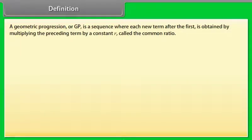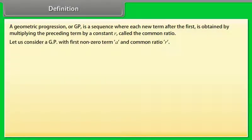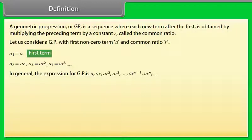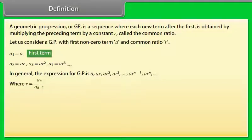A geometric progression or GP is a sequence where each new term after the first is obtained by multiplying the preceding term by a constant R, called the common ratio. Let us consider a GP with first non-zero term A and common ratio R. A1 = A, A2 = A·R, A3 = A·R², A4 = A·R³, and so on. In general, the expression for GP is: A, A·R, A·R², A·R³, up to A·R^(n−1).